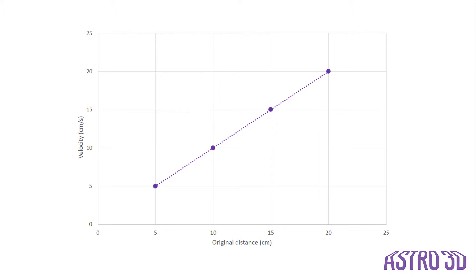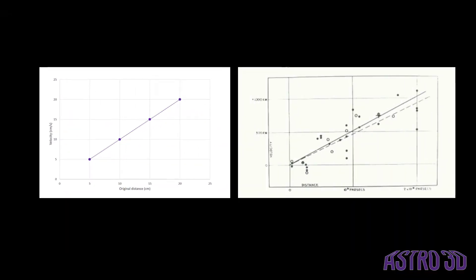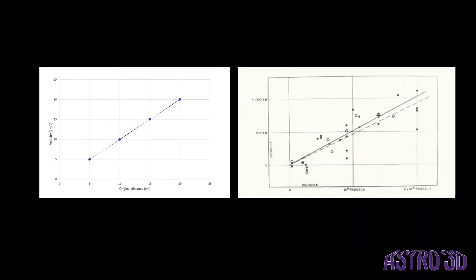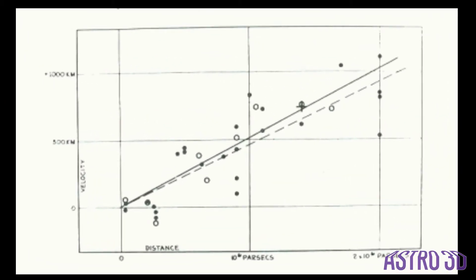Now we see that not only has the peg that was originally farthest away from Earth moved the largest distance, it's also moved with the highest speed. This is exactly what Vesto Slipher observed for galaxies, although the distances and speeds are much larger than our experiment. In fact, galaxies observed by Slipher were found to be traveling at hundreds of kilometers per second and existing at distances of up to 6 × 10¹⁹ kilometers away. This is so far that it would take light more than 6 million years to travel from one of these distant galaxies to Earth.